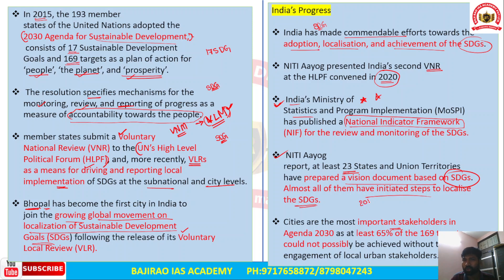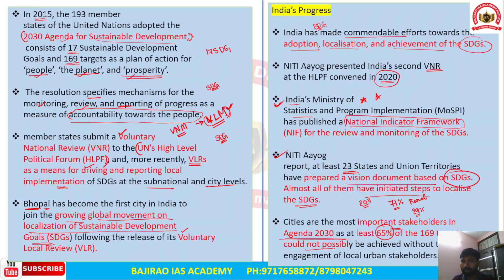As per the 2011 census, almost 71% of population lives in rural areas and around 29% in urban areas. Despite this, cities are the most important stakeholders in the 2030 Agenda, because at least 65% of the 169 targets under SDGs cannot be achieved without the active participation of city administrations and urban stakeholders. Therefore, cities play a very crucial role.